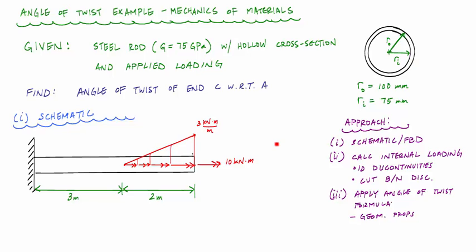So I have this axially loaded steel rod. It has a hollow circular cross-section with an outer radius of 100 millimeters and an inner radius of 75 millimeters. The loading applied to this rod is a linearly distributed load that starts from 0 kilonewton meter per meter to 3 kilonewton meters per meter. And then at the end of the rod, I have a concentrated torque of 10 kilonewton meters. I label these points C, B, and A, where A is the fixed support, B is where the distributed loading starts, and C is the end of the rod. And what I want to find is the angle of twist of end C with respect to end A.